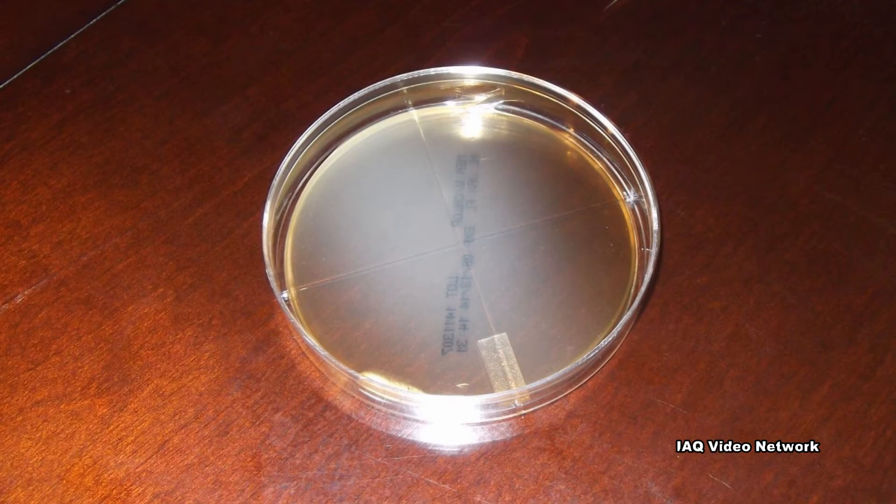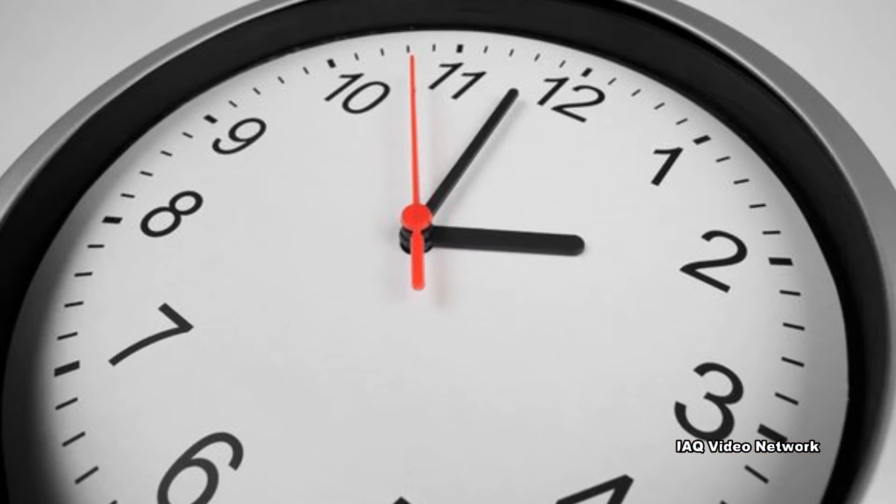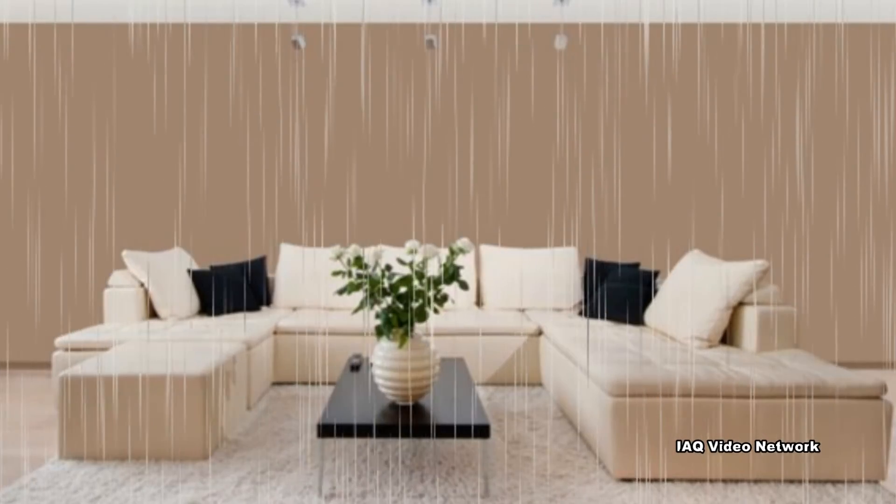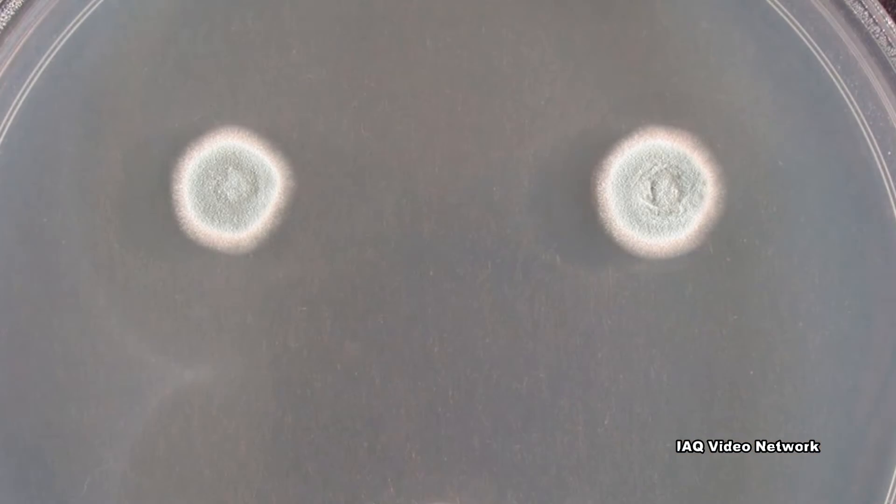Settling plates are petri dishes set out over a period of time to determine the presence of mold. The concept is that mold in the air will settle on the plates and begin to grow as the mold uses the agar in the petri dish as a food source.